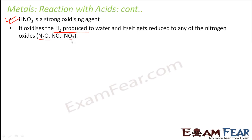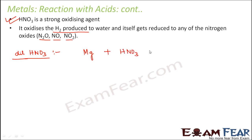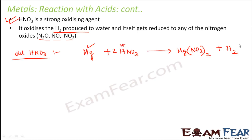Let us look at reactions with dilute nitric acid (dilute HNO3). When magnesium reacts with dilute nitric acid, it forms magnesium nitrate — Mg(NO3)2 — plus hydrogen gas. In this case, hydrogen gas is released because dilute nitric acid is not a strong enough oxidizer. So the metal reduces the hydrogen ions from the acid to form hydrogen gas, which is what metals normally do when they react with acids.